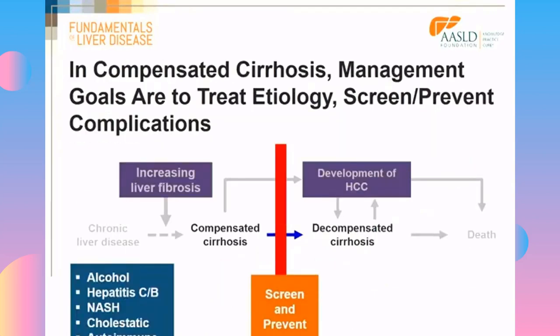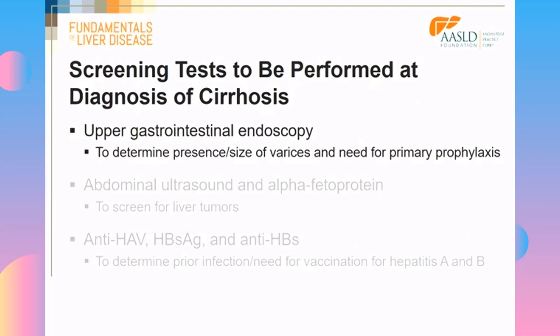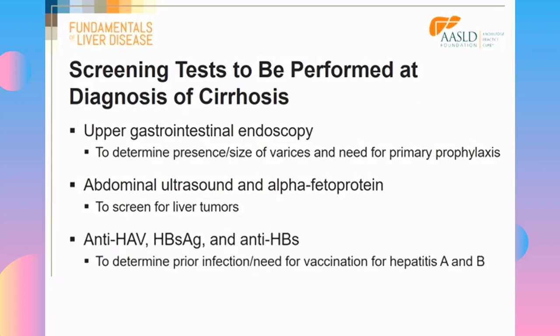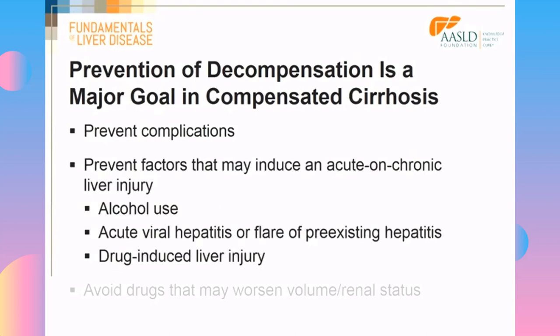Regarding screening and prevention, the following tests should be performed once you make the diagnosis of cirrhosis: an upper GI endoscopy to see if the patient has varices, their size, and whether primary prophylaxis is needed; an abdominal ultrasound and alpha-fetoprotein to screen for liver tumors; and hepatitis A and B serologies to determine immunity and need for vaccination. Prevention of decompensation is a major goal — prevent variceal hemorrhage, prevent factors that may induce acute-on-chronic liver injury, and avoid drugs that may worsen volume or renal status.